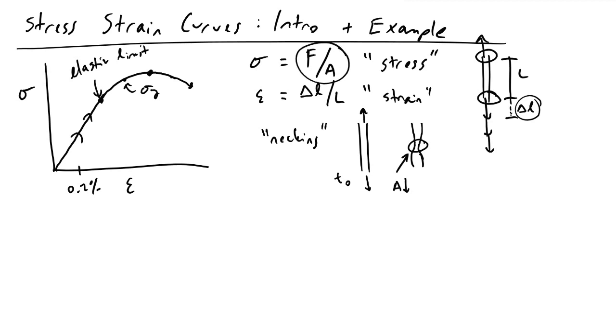Going back to our definition of sigma, because area is in the denominator of sigma, if your area is getting smaller and smaller, your stress will continue to increase. We realize this in our stress strain curves by seeing this local maximum occur, which is referred to as your ultimate tensile strength.